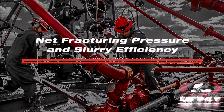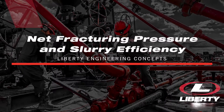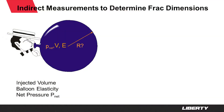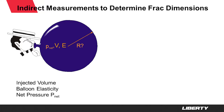Two things that we can measure on location are net frack pressure and slurry efficiency. There are a variety of independent measurements that we can do to try to determine fracture dimensions without measuring them directly. This problem is somewhat analogous to determining the radius of a balloon based on the injected volume, the balloon's elasticity, and the pressure inside that balloon. For a fracture it works very similarly, and from those balloon parameters we can determine the radius given certain physical constraints and relationships.